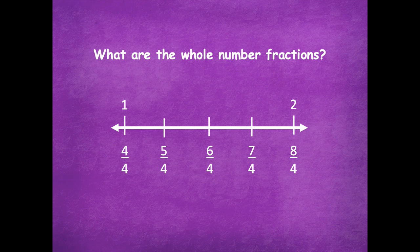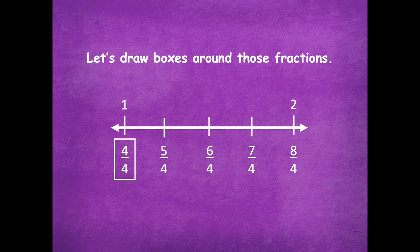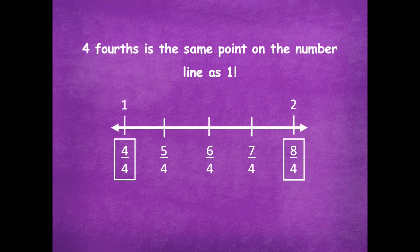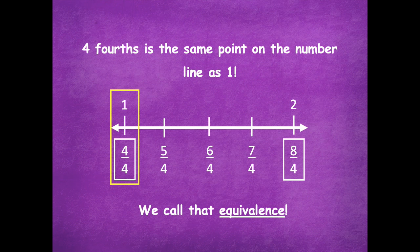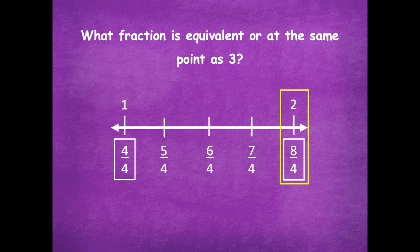So that's a cool way to check to make sure that you're correct as you're labeling your whole numbers. What are the whole number fractions on our number line? Four fourths and eight fourths. Let's draw boxes around those fractions. Four fourths is the same point on the number line as one — we call that equivalence, so those are equivalent numbers. One whole is the same as four fourths. How many fourths would be equivalent to two? Eight fourths.